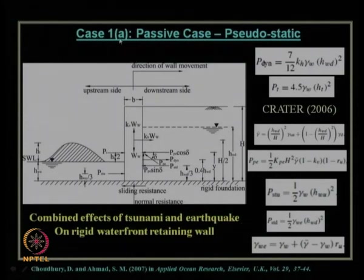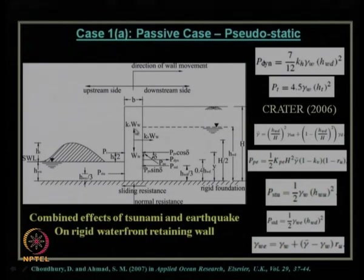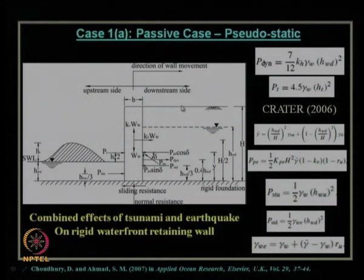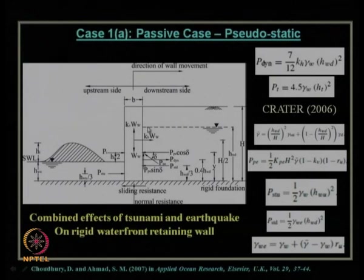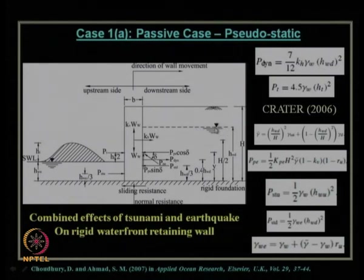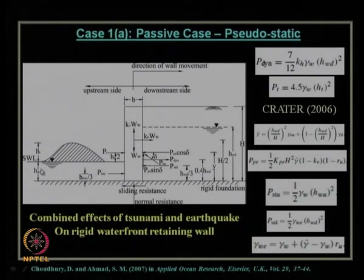For the passive case — when the tsunami wave is attacking the wall — using the pseudo-static method, this is the line diagram of a rigid waterfront retaining wall. The downstream side is the shore where soil exists, and the upstream side is the water or sea side. The height of the downstream water table is h_wd, and the total wall height is H. On the upstream side, h_wu is the still water level of the sea.